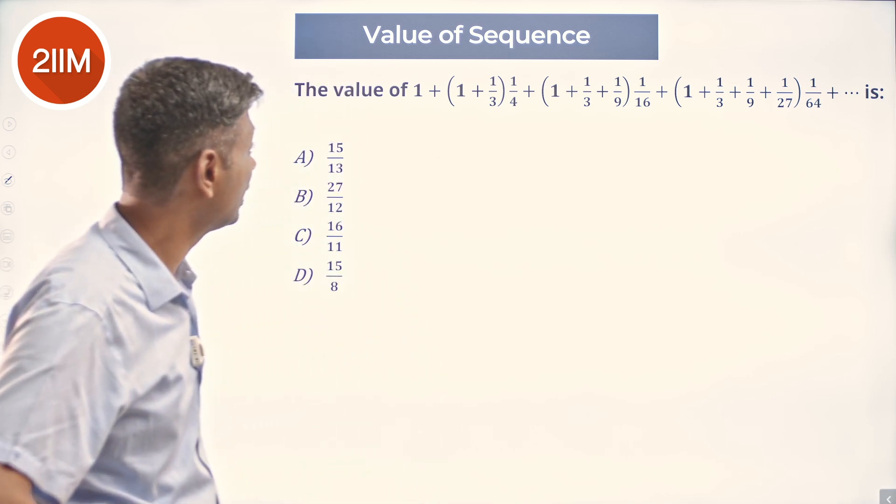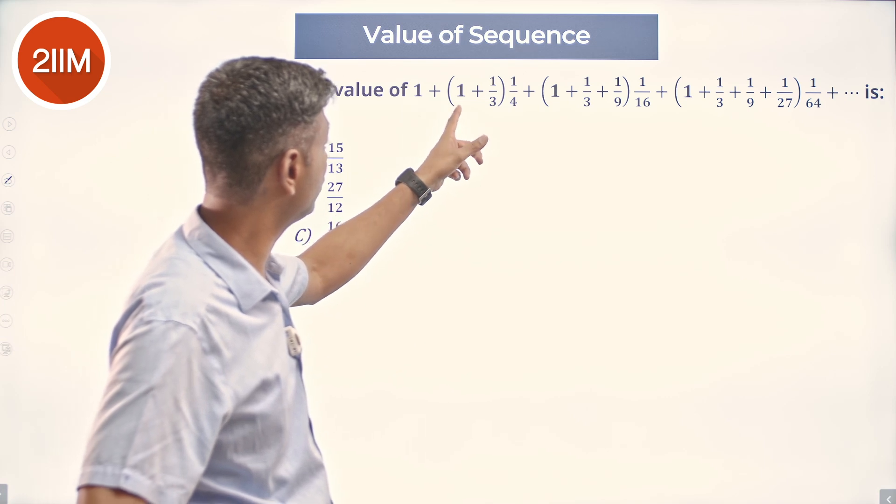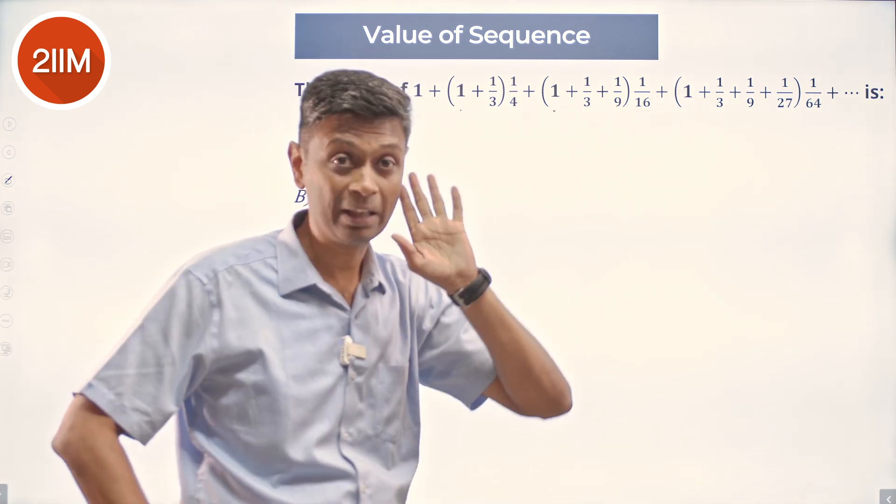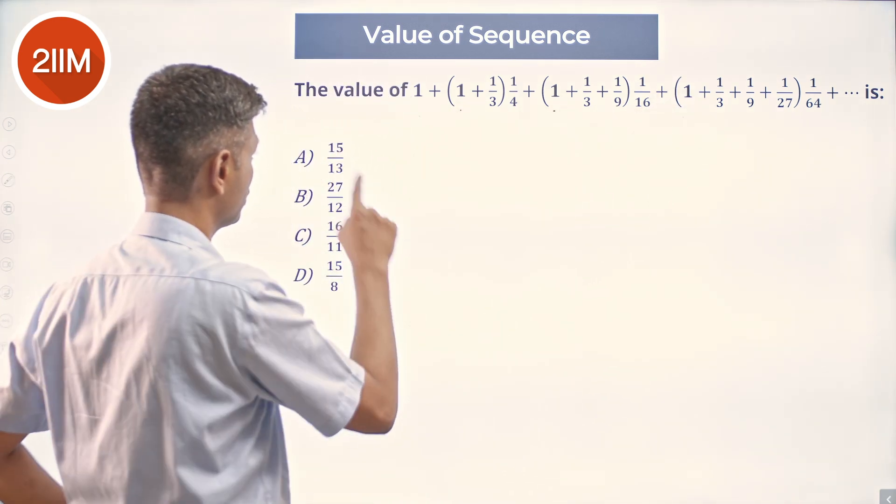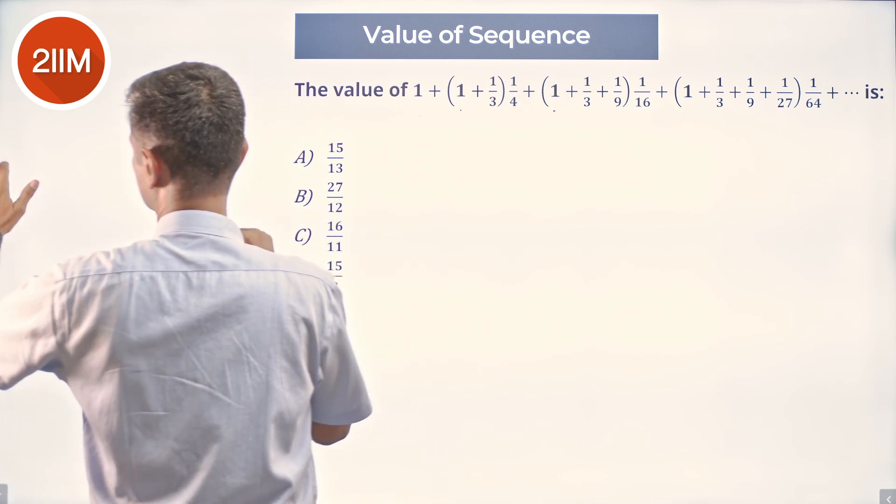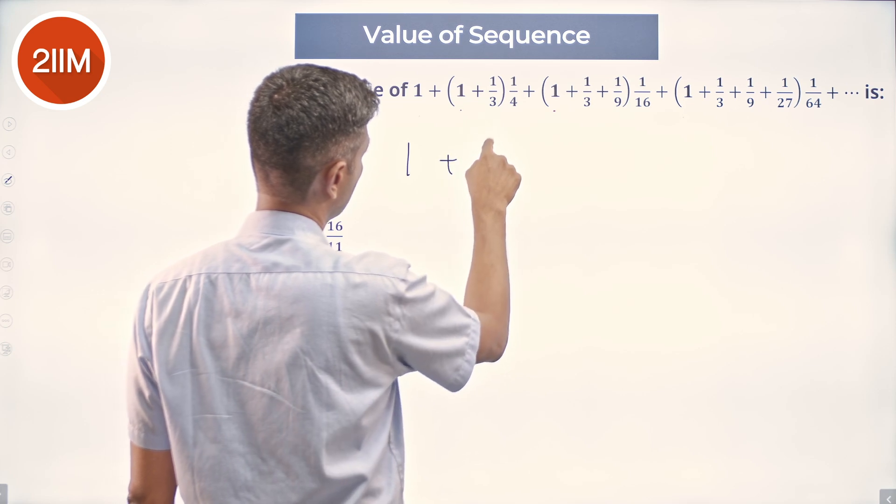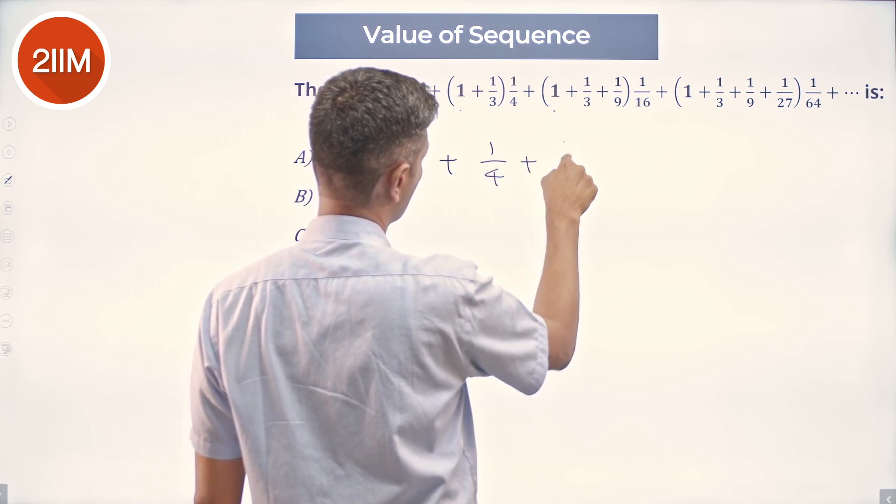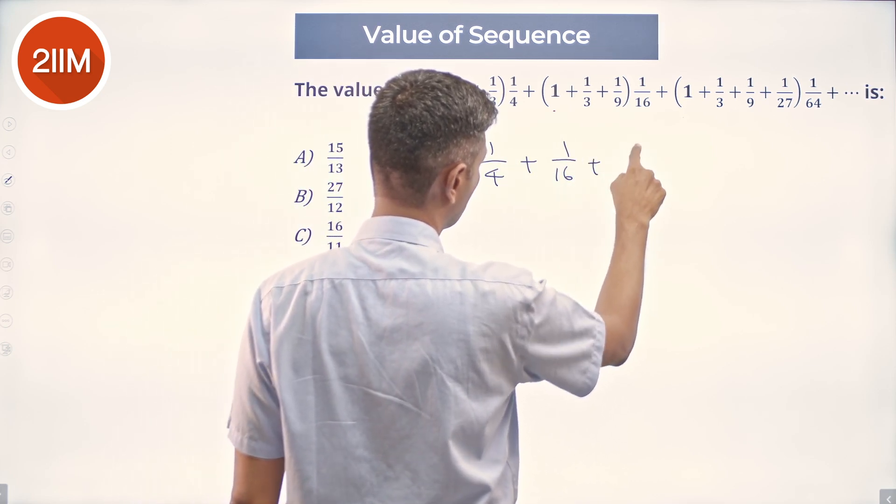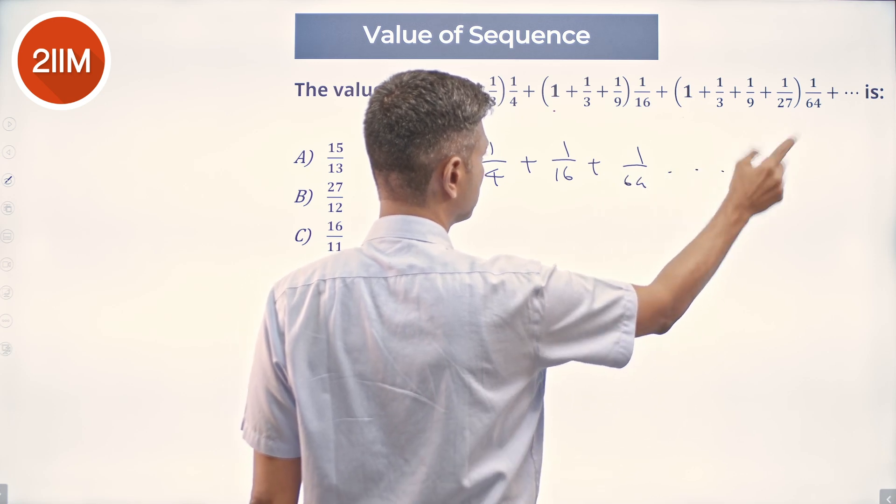So what I'm going to do, I'm going to say hey, I'm going to take the first terms of this sequence and attack them first. So, first terms is 1, 1 plus 1/4 plus 1/16 plus 1/64 and so on infinitely.